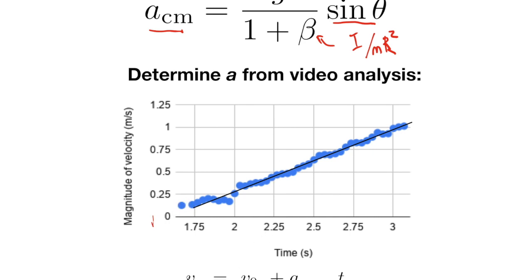Then you just make the association that the velocity at a given time is equal to some initial velocity v naught plus the acceleration of the center of mass times t, where the acceleration is just the slope of the line.